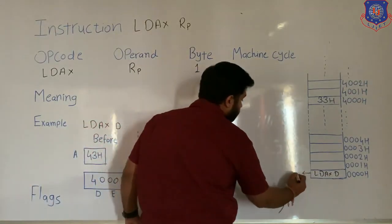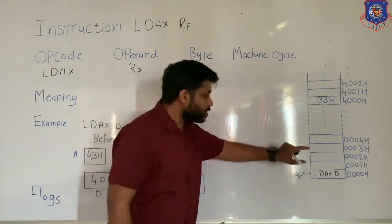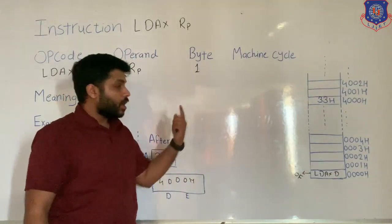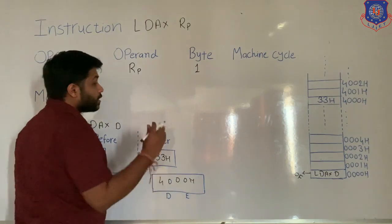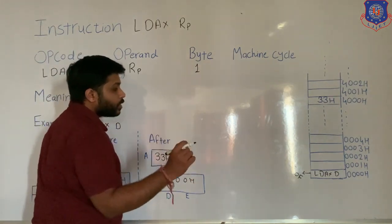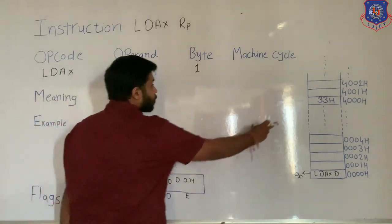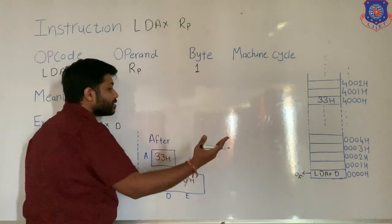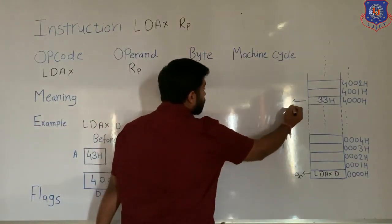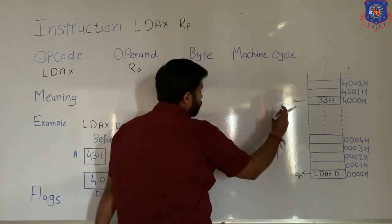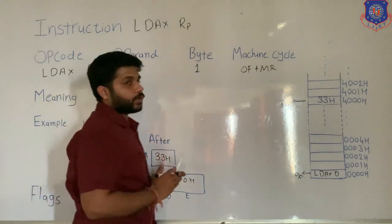The processor will start doing its work — fetch, decode, and execute. To fetch the instruction, the processor performs the first machine cycle, which is opcode fetch. Since this instruction is stored in one location, the whole instruction is transferred to the microprocessor. After decoding, during execution, the processor transfers data from a memory location to the register, which means it performs a memory read. So this instruction requires two machine cycles: opcode fetch plus memory read.